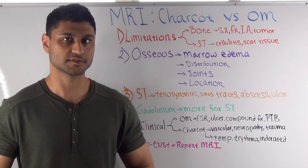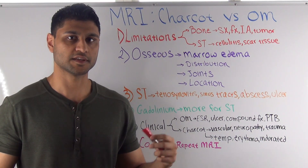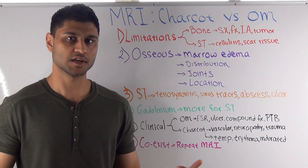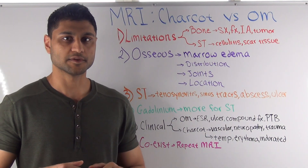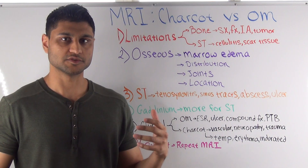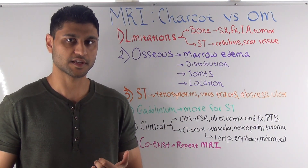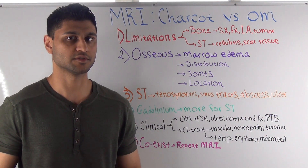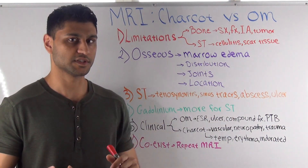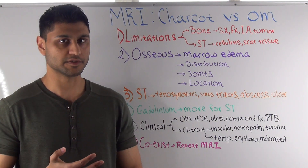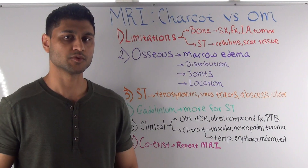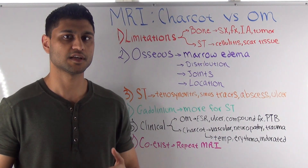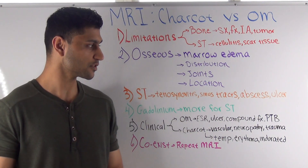The other important thing is what the joints look like in osteomyelitis versus a Charcot foot. Remember, osteomyelitis is predominantly an erosive process, whereas Charcot is a joint destructive process. When you think about joint disease, you think about subchondral cysts and intraarticular loose bodies — sometimes called joint mice. Those are very common findings in a Charcot type of foot. With osteomyelitis, generally you will not see that, because the erosive process will actually eat away at any joint mice and subchondral cysts.